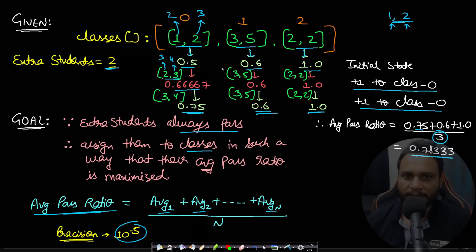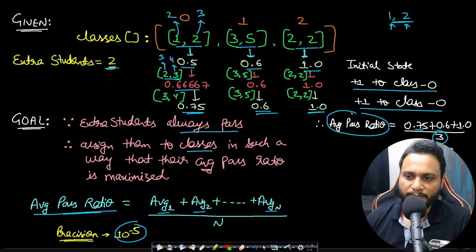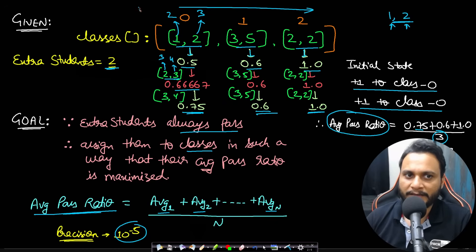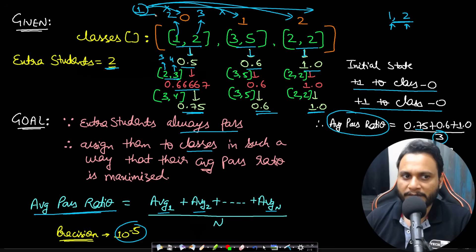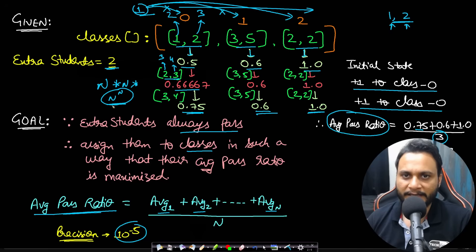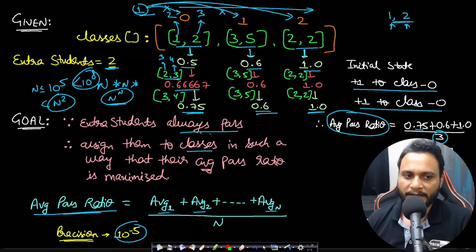To find the maximum average pass ratio, you might try each student in every class. In the worst case each student has n choices, giving n^n total combinations — extremely high. With n up to 10^5 for both classes and extra students, this brute force approach is completely infeasible and must be discarded.